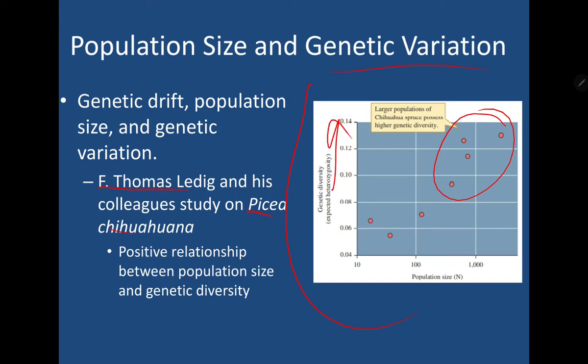What they found was a positive relationship between population size and genetic diversity, with larger populations being more diverse. Larger population size corresponds to higher genetic diversity, while lower populations are found lower on the genetic diversity scale. The smaller populations of Chihuahua spruce have higher chances of specific alleles being wiped out due to natural conditions — fires or storms, lightning strikes, for example.